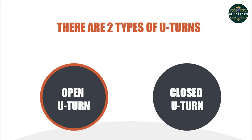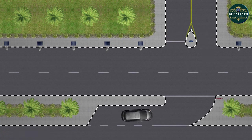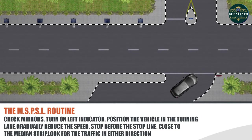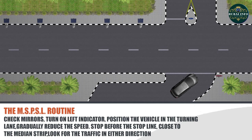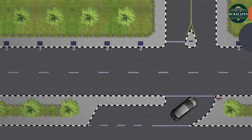Open U-turn. An open U-turn is where a U-turn is being made opposite to another road. While approaching towards the open U-turn, follow the MSPSL routine: check mirrors, turn on left signal, position the vehicle in the turning lane, gradually reduce the speed, stop before the stop line close to the median strip. Look for the traffic in either direction. It is advisable to do a head check for possible hazards like two-wheelers on the left side before turning.